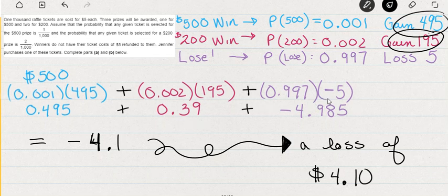And then all those losers, we have a negative $5 value times this probability of losing, which is 997 1,000ths. And if we add all three of these possible outcomes, we see that there's a loss of $4.10, or the expectation is negative $4.10.